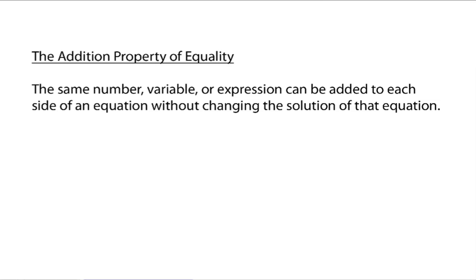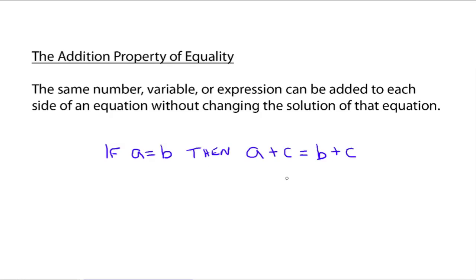Here's the first property. It's called the addition property of equality, and it says the same number, variable, or expression can be added to each side of an equation without changing the solution of that equation. In other words, we can add the same thing to both sides of an equation. In math symbols, if a equals b and we add c to both sides, then a plus c equals b plus c.